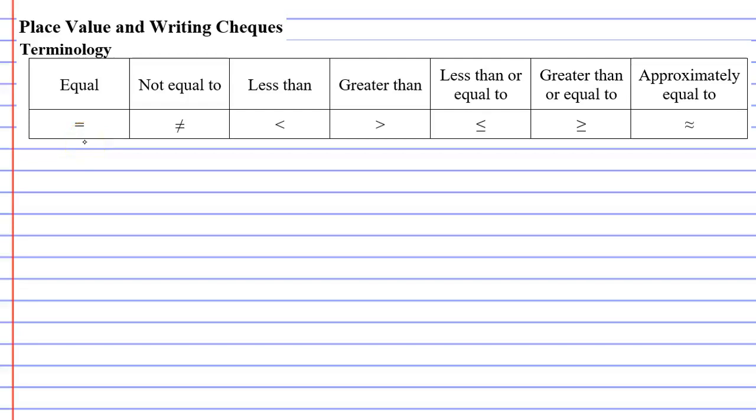In this video we're going to look at some terminology, and we have seven symbols that we're going to discuss. Starting with the equal sign, which I'm sure you're all familiar with. 1 plus 2 equals 3 is a really simple example of that.